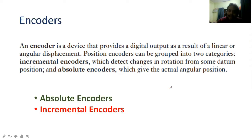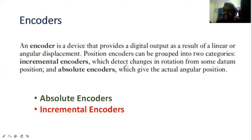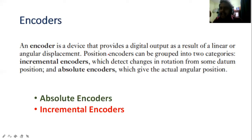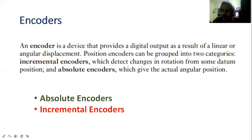Position encoders can be classified into two categories: one is the incremental encoder and the other is the absolute encoder. What is the incremental encoder? What is the absolute encoder?